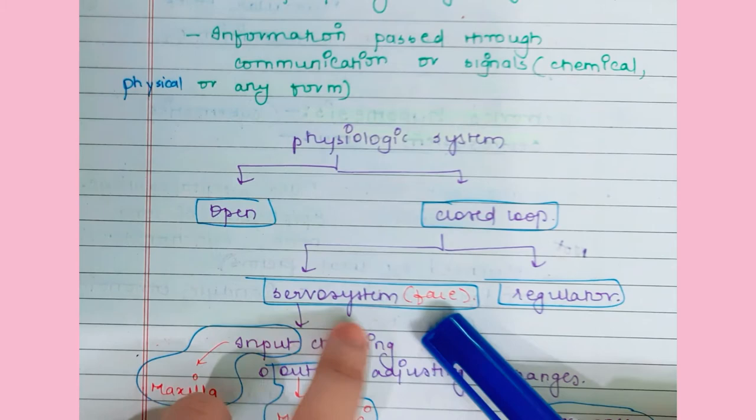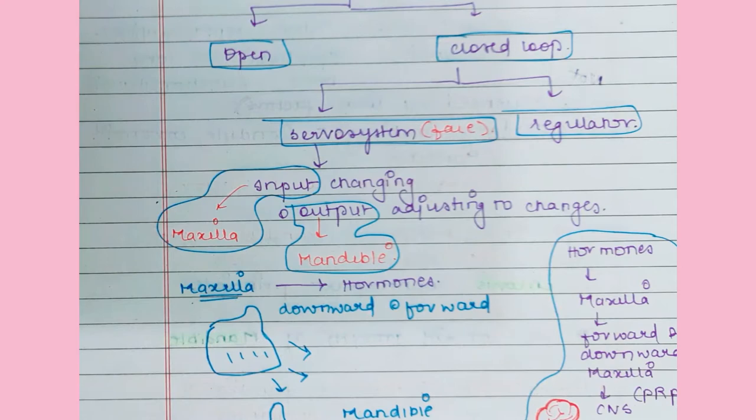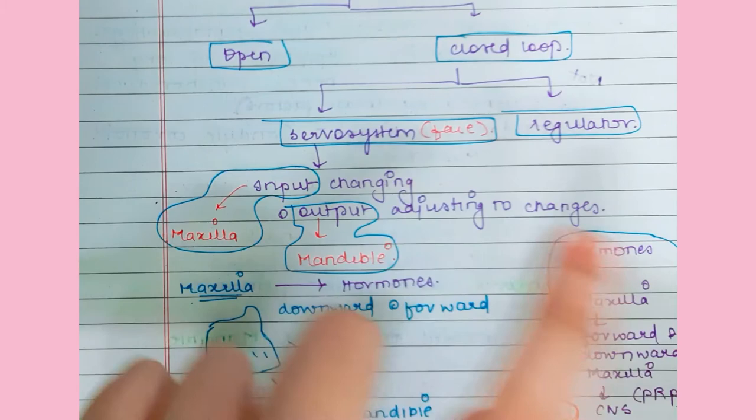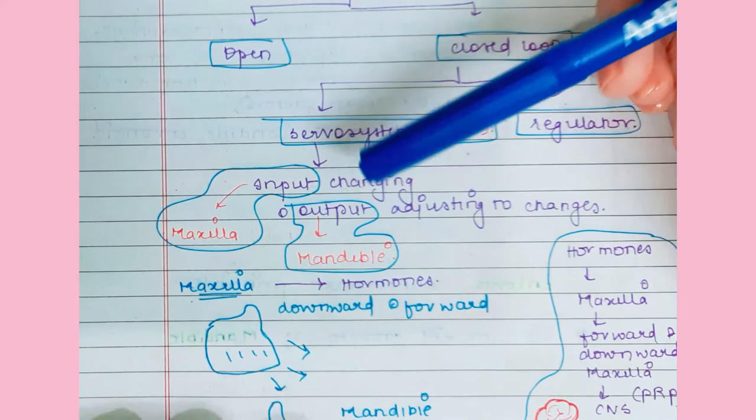The servo system is our face, and it has a regulator. In this servo system, the input is the maxilla, which is constantly changing. The output is the mandible, which is adjusting to those changes. The maxilla is the thing constantly changing with time, and the mandible adjusts accordingly. These are also influenced by hormones.